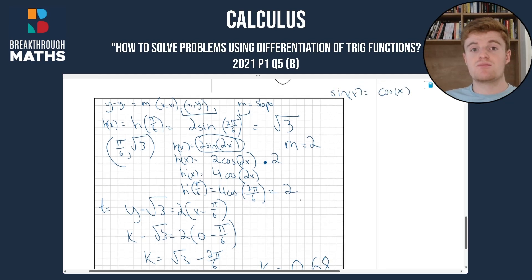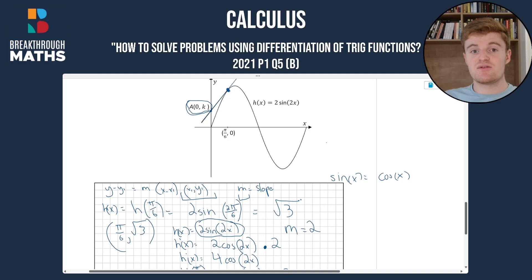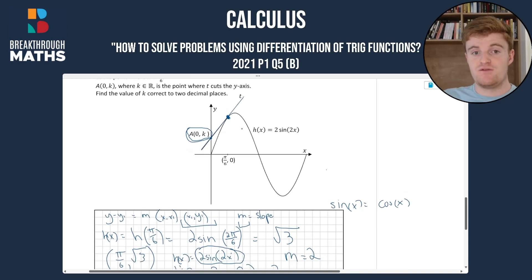So now you know how to solve problems using differentiation of trigonometric functions. If you ever have a problem like this where you have a tangent to a trigonometric function, if you differentiate that function, you're going to be able to find the slope of the line, which will aid you in finding the equation of the line.